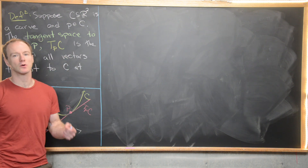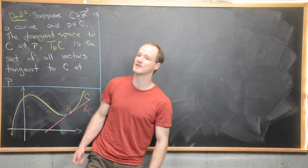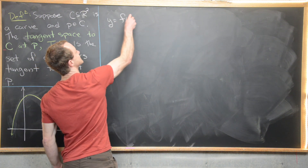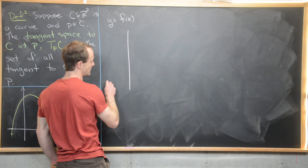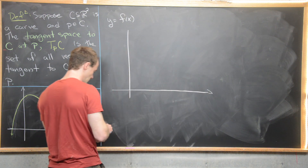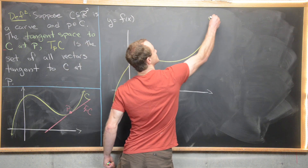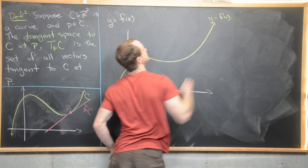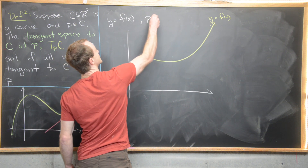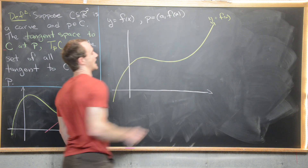Let's rephrase a simple question from Calculus 1 in the language of the tangent space. Let's say we've got a curve y equals f of x. We can make a picture of that pretty easily. All points along this curve are of the form A comma F evaluated at A.